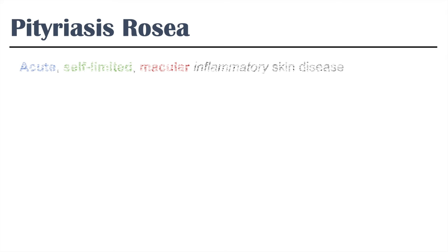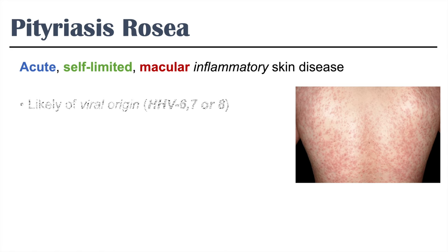Pitoriasis Roja is an acute, self-limited, macular inflammatory skin disease. The etiology of Pitoriasis Roja is not entirely known. It is likely of a viral origin, and it's believed to be related to an infection with human herpesvirus 6, 7, or 8.